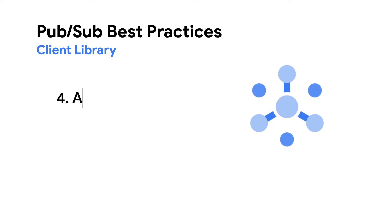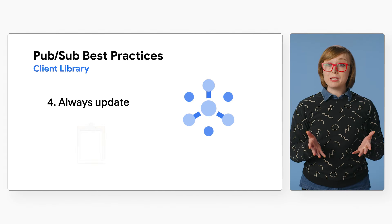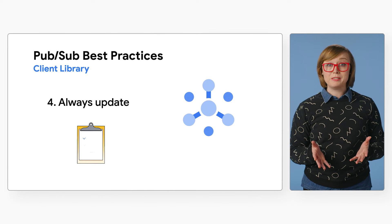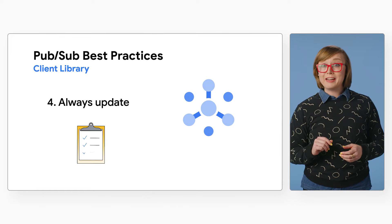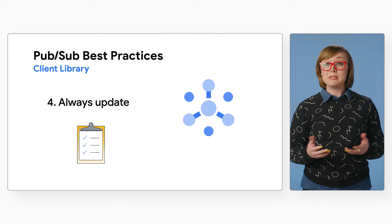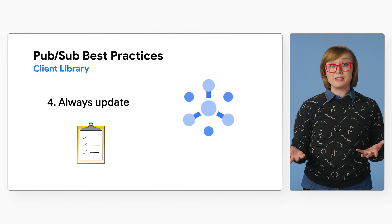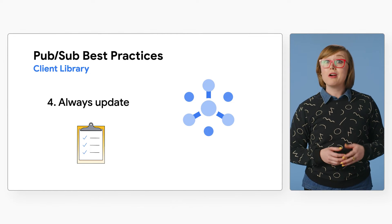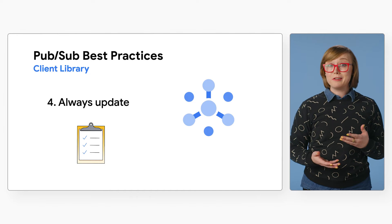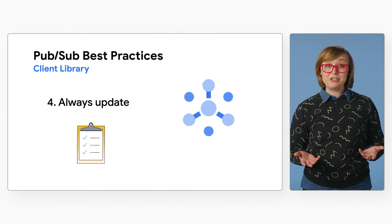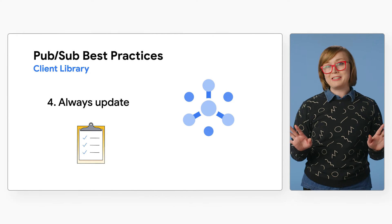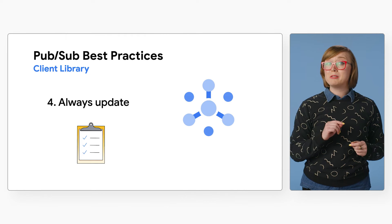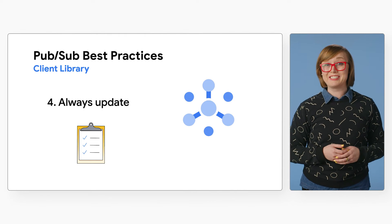Number four: always update. Be sure to stay up to date with client library versions. Newer client library versions may contain fixes for critical issues, or are likely required to use some new features. Check out our documentation for all the latest info on PubSub's updates and features.